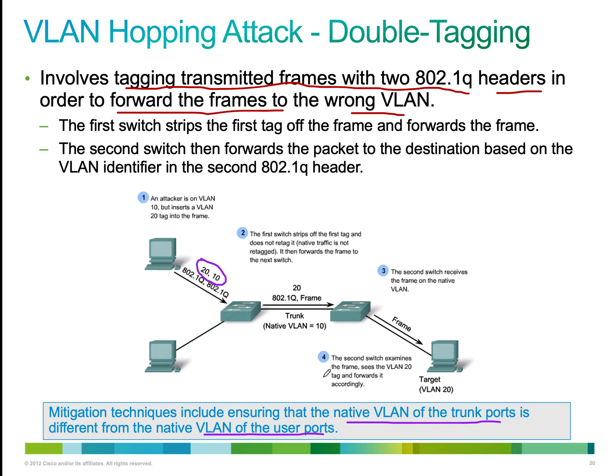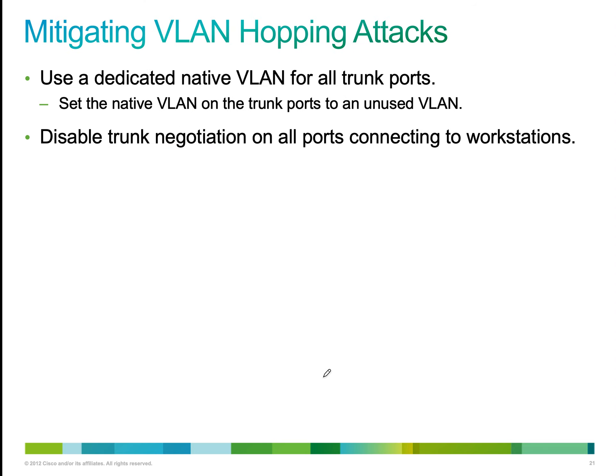When configuring, we ensure the native VLAN of the trunk port is different from the VLAN of the user port. To mitigate VLAN hopping attacks: use a dedicated native VLAN for all trunk ports, ensure it is separate and different from user ports, set the native VLAN on the trunk port to an unused VLAN, and disable trunk negotiation on all ports connected to workstations.